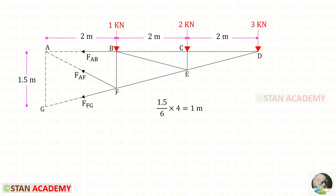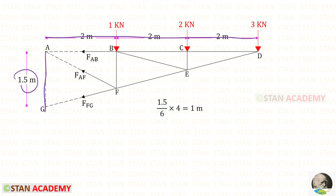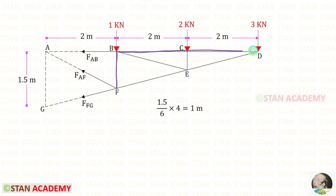We need to find the length of BF. For a distance of 6 meters, the height is 1.5. So for a distance of 4, we multiply by 4 over 6, giving a height of 1 meter for the length of BF.